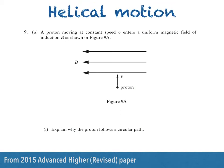Hi there. In this video I'll be answering a question about the motion of charges in magnetic fields, and in particular, the helical motion of charged particles when moving at an angle to the field. Here's a question from the 2015 revised Advanced Higher paper. A proton moving at constant speed v enters a uniform magnetic field of induction B, as shown in figure 9A. We're then asked to explain why the proton follows a circular path.